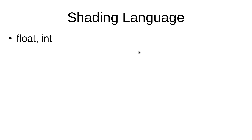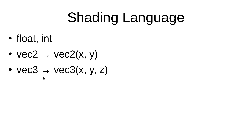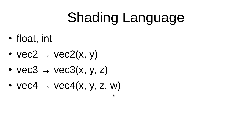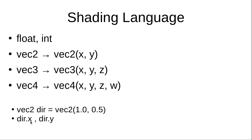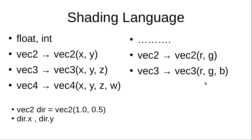Now we are going to talk about the shading language that we use in Godot. In that shading language we have different types of variables. For example, we have float and integer — you already know what those are if you have a programming background. We also have the vector2 type, which has two components: X and Y. We also have vector3, which has three components: X, Y, and Z. And vector4, which has X, Y, Z, and W. All of these components are float numbers. To define a vector2, for example, you write the type, the name of the variable, and provide the first and second components. You can access each component using dot notation: .x or .y.